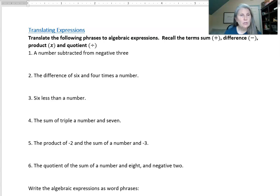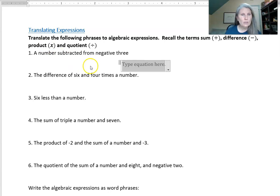We want to be able to use those terms but also other keywords that help us know what we're doing when we translate. In the first one we have a number subtracted from negative 3. The subtracted obviously means we're going to be subtracting, but we're going to be subtracting a number from negative 3. So I can say negative 3 and then we're subtracting some number. Notice that because we said the number was being subtracted from something, that number has to go second.